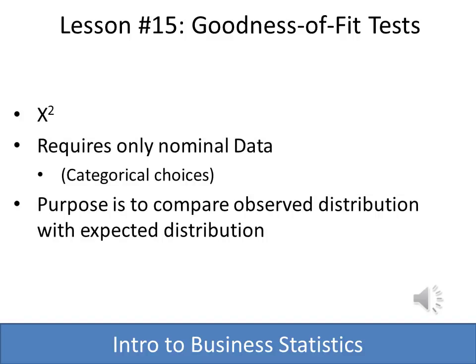The good news is we've come to the last chapter in the book, and the second part of good news is this is actually a very easy concept. We're going to be talking about goodness of fit tests. The symbol is the Greek symbol chi — we actually call it chi-square.